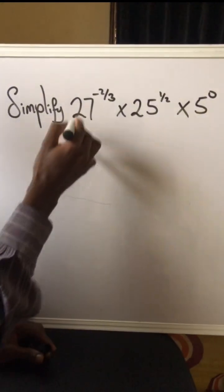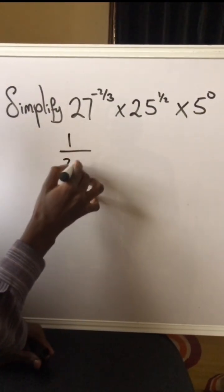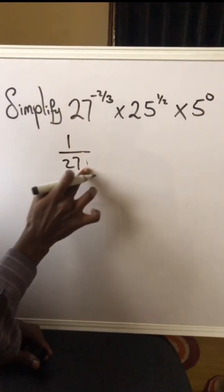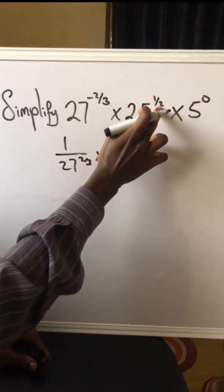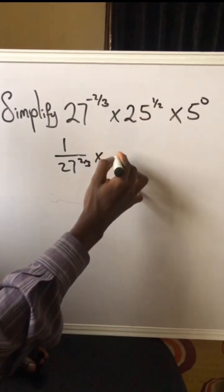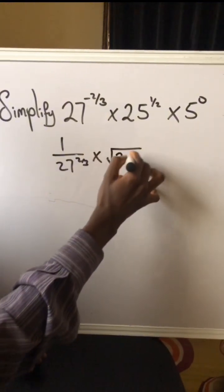You need to deal with the negative sign, and that would be 1 over 27 to the power 2/3, times 25^(1/2). When you see this 1/2, it's the same as square root, times 5 to the power of 0, which is absolutely 1.